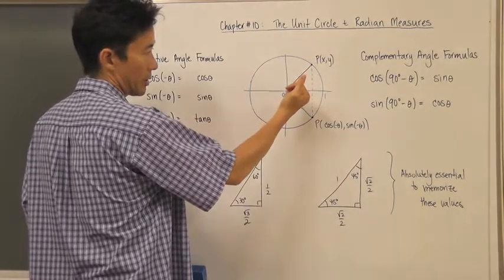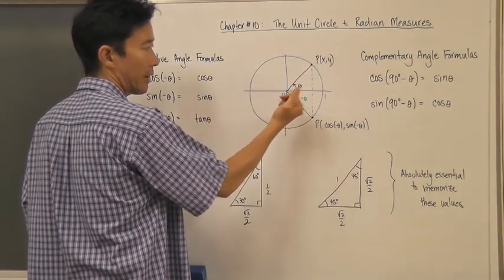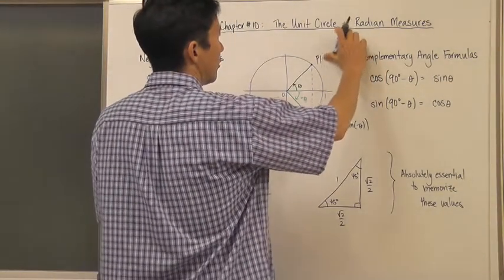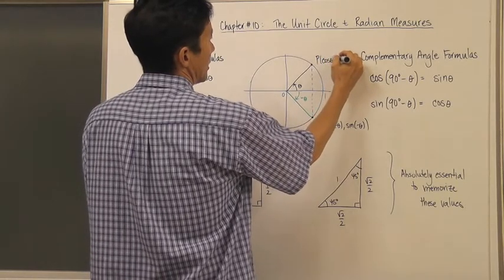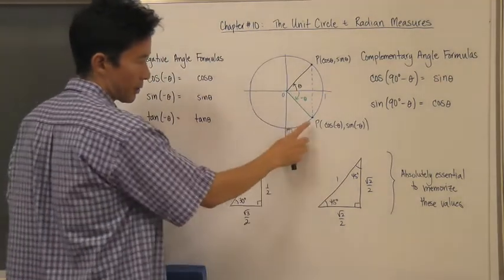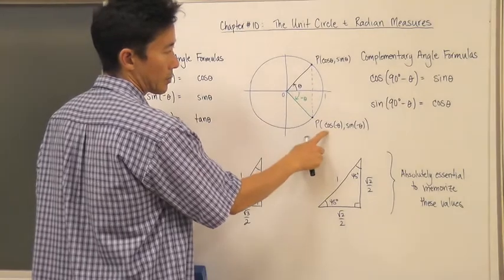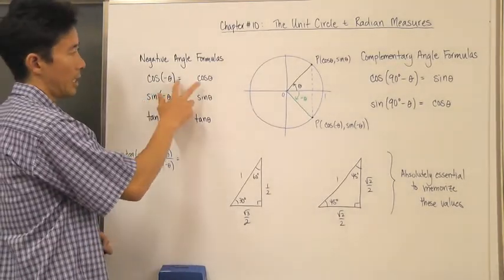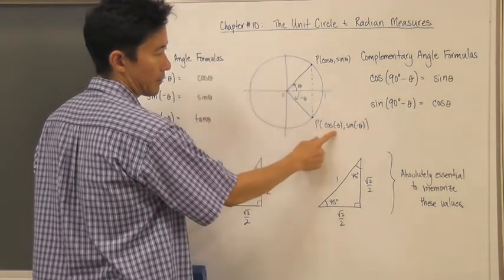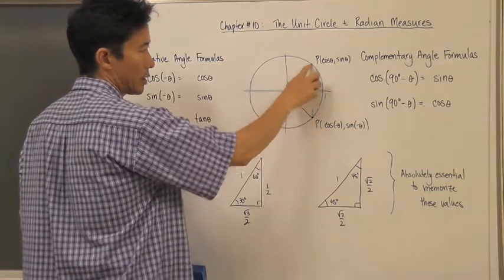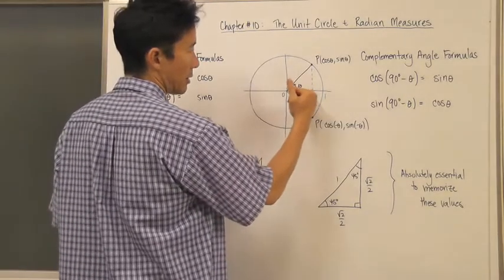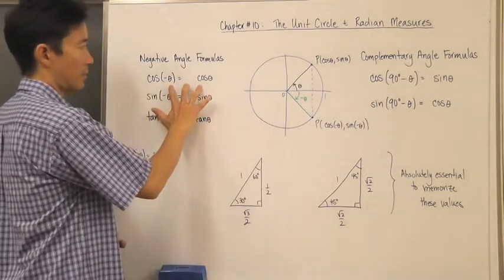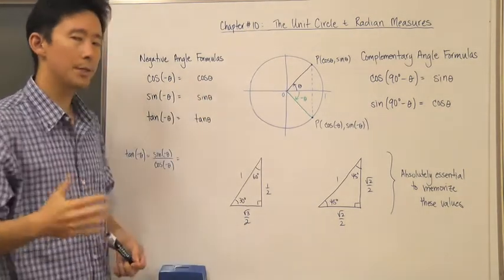I've drawn in the first quadrant the positive angle theta, and in the fourth quadrant the negative angle theta — both in standard position. We come up with a point P which is (x, y), representing cosine of theta and sine of theta. For the angle negative theta, the point is cosine of negative theta, sine of negative theta. Comparing the x-values for both, they are the same. So cosine of negative theta equals cosine of theta — that's our first negative angle formula.